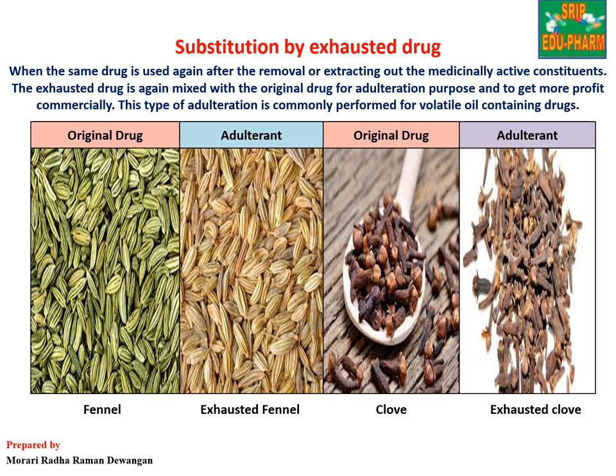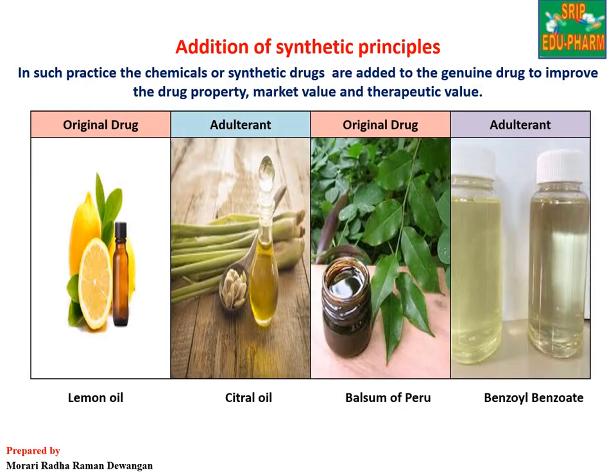Another method for intentional and direct adulteration is the addition of synthetic principle. In this way, a synthetic or chemical substance is mixed with the genuine or original drug to apparently improve its quality. For example, citral oil mixed in lemon oil, and benzyl alcohol or benzoate mixed in balsam of Peru.